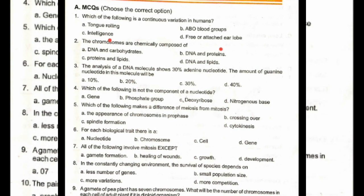The analysis of a DNA molecule shows 30% adenine nucleotide. The amount of guanine nucleotide in this molecule will be 30%. Option C. Which of the following is not a component of a nucleotide? Option A: Gene.